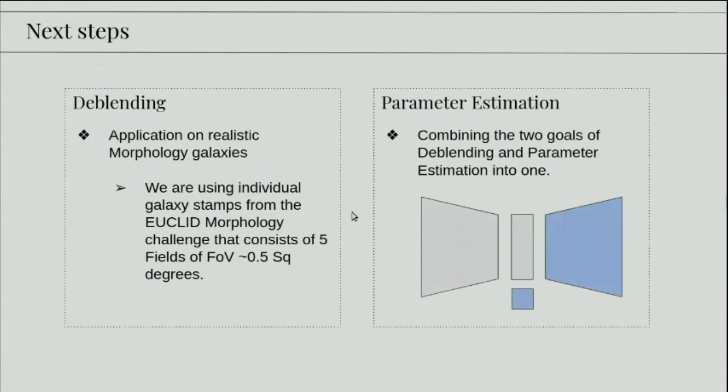And I also want to combine the two goals of deblending and parameter estimation into one network. So as of now, we have this sort of network where there's an input image, there's a bottleneck, and there's decoder that gives you an output image of deblended image. But it would be more useful if I have a deblended source, and at the same time, using the latent space is able to give us estimates into parameters like fluxes and other morphological parameters like ellipticity and so on. So thank you for your attention.